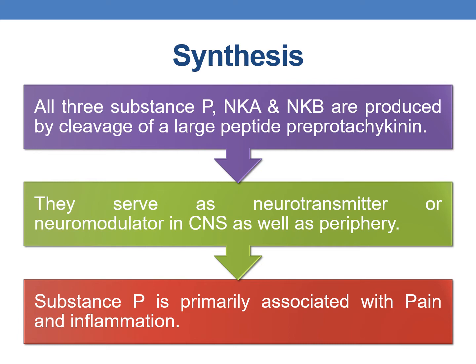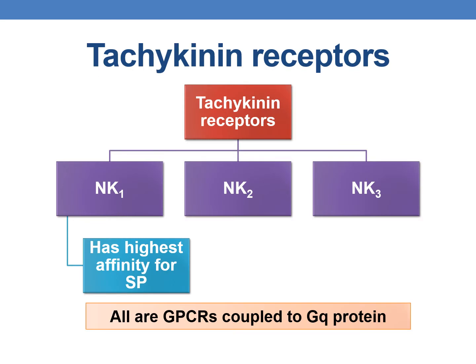Substance P is primarily associated with pain and inflammation. Coming to the tachykinin receptors, they are of three types: NK1, NK2, and NK3. The NK1 receptor has the highest affinity for Substance P. All tachykinin receptors are G-protein coupled receptors coupled to Gq protein.